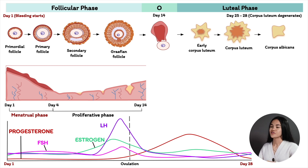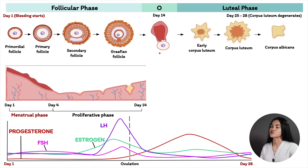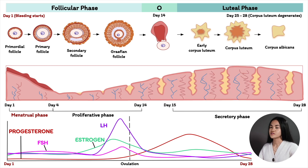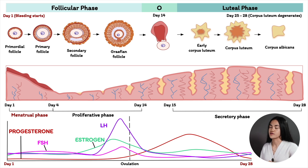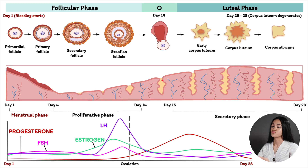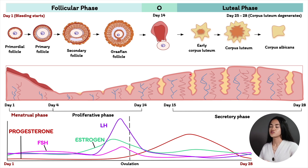On day 14, ovulation occurs — a secondary oocyte is released — marking the start of the secretory phase, which corresponds with the luteal phase, day 15 to day 28. During this phase, the corpus luteum develops and secretes large amounts of progesterone, and progesterone transforms the endometrium into an actively secreting tissue. The endometrium is rich with blood vessels, and the glands become coiled and spiral — a corkscrew shape — filled with glycogen and enzymes.